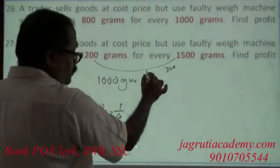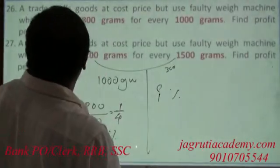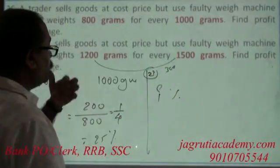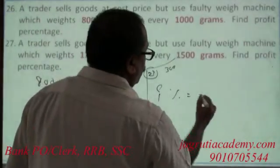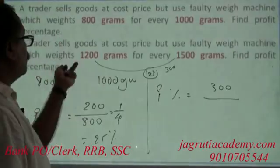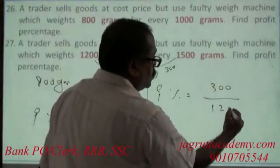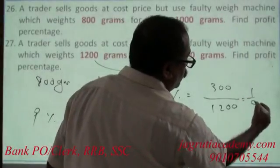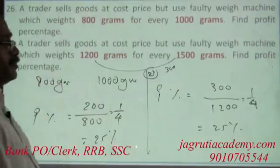So, what is the profit percentage? This is question 27. Profit percentage equals how much profit he makes — 300 grams — on a delivery of 1200 grams. So it is 300 over 1200, which becomes 1 by 4, equal to 25 percent.